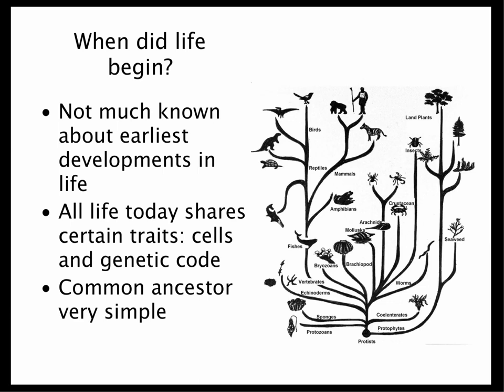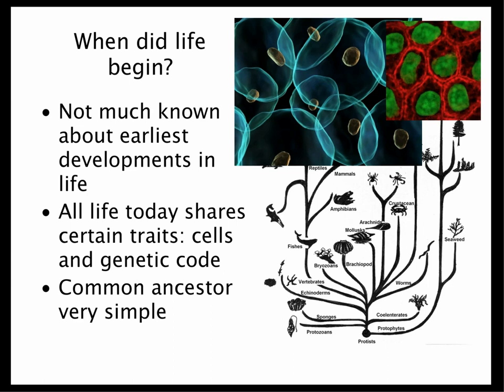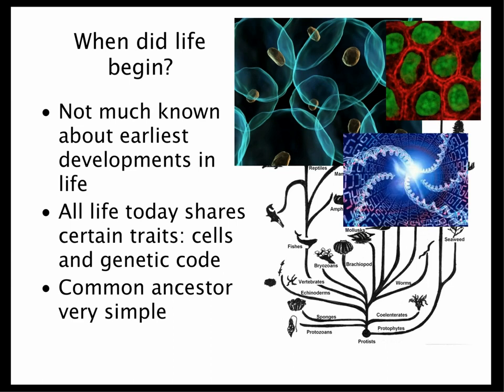All life today shares certain traits. From me to you to chimpanzees to birds to trees, all life on Earth is made of cells, and in those cells there is something called the genetic code. That's basically the instructions for making and keeping the animal going. And that does suggest that maybe all life on Earth comes from a very, very simple common ancestor.